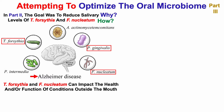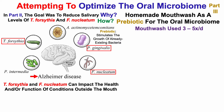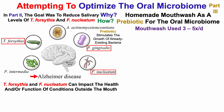So then the next question is, how would I reduce levels of these bacteria? I've been using a homemade mouthwash as a prebiotic for the oral microbiome. A prebiotic is a substance that stimulates the growth of already existing bacteria. If you're interested in the contents of that mouthwash, I'll link to parts one and two in the right corner. I've been using the mouthwash three to five times per day. For test number three, I added clove oil to the mouthwash, but also used summer savory oil, which has been shown to impact levels of these bacteria. I'll link to that paper in the video's description.